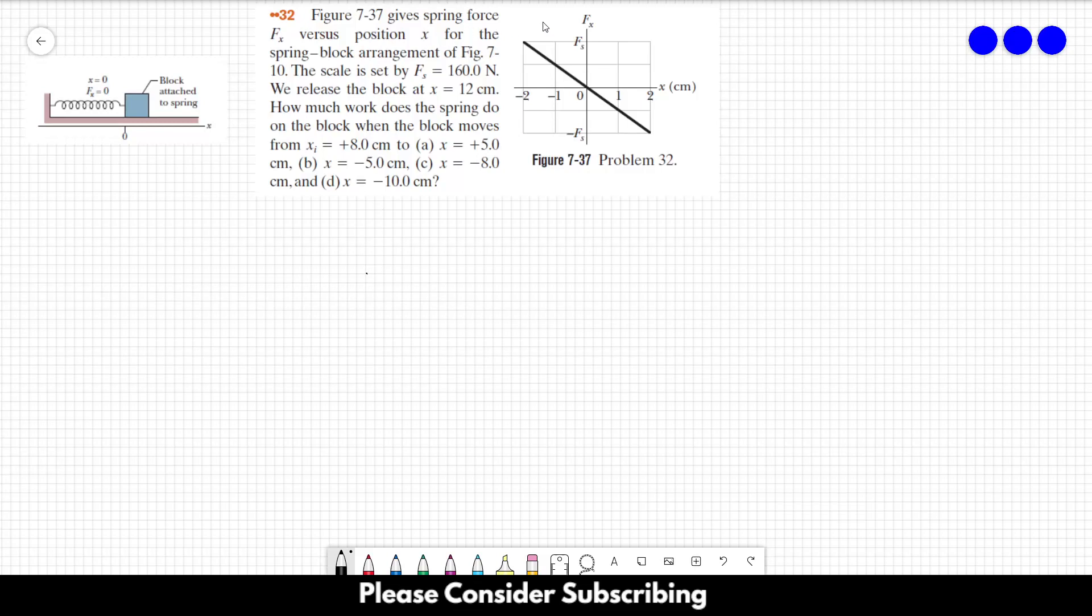Number 32. This figure here gives spring force fx versus position x for the spring block arrangement of this figure here. The scale is set by fx equals to 160 newtons.